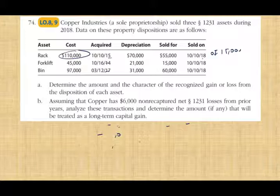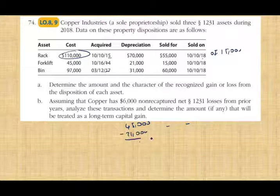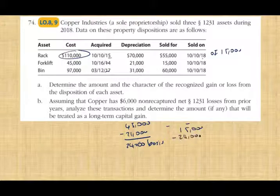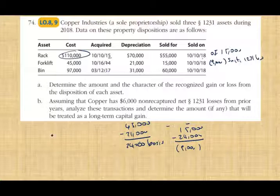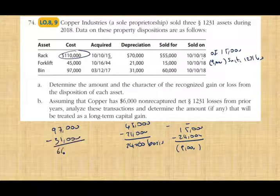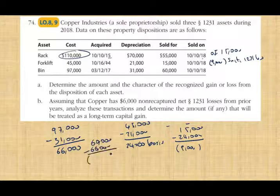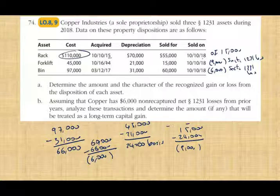For the forklift: cost $45,000, depreciation $21,000, basis is $24,000. Sold for $15,000. $15,000 minus $24,000 gives a loss of $9,000 — Section 1231 loss. For the bin: cost $97,000, depreciation $31,000, basis is $66,000. Sold for $60,000. $60,000 minus $66,000 gives a loss of $6,000 — Section 1231 loss.